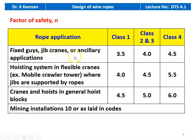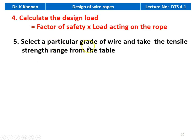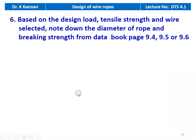For flexible guys, jib cranes are class 1, class 2 and 3, class 4 ancillary applications. For hoisting systems of flexible cranes where jigs are supported by the rope, and for cranes and hoists in general hoisting block 4.5, 5 and 6, and all mining installations, the factor of safety is 10. Then calculate the design load as factor of safety multiplied by load acting on the rope. Select the particular grade of wire and take the tensile strength range from the table: for a given grade, tensile strength 120–150 kgf/mm² or for 160 grade, 160–190 kgf/mm².